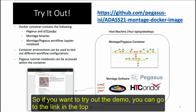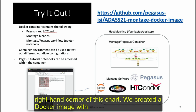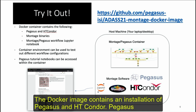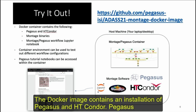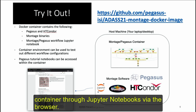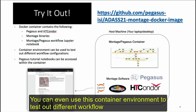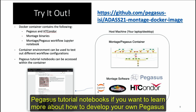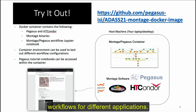To try out the demo, go to the link in the top right corner of the chart. We created a Docker image with everything needed to run the Montage workflow Jupyter notebook. The Docker image contains an installation of Pegasus and HT Condor — Pegasus sits on top of HT Condor, which actually runs the jobs. It also includes the Montage binaries and the workflow notebook. You can interact with this container through Jupyter notebooks via the browser, test different workflow configurations, and access Pegasus tutorial notebooks.